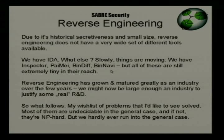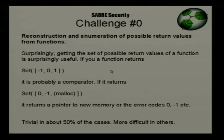I'll name ten research problems that, for most of them, I think can be solved using moderate amounts of time and money. Many will be NP-hard in the general case, but I've never met the general case, so don't be turned off. Challenge zero is so simple it gets the number zero: given a set of functions, generate for each function the set of possible return values. You see a function that can return +1, -1, 0 — you can almost deduce it's a comparator. This is really trivial, doable in a few hundred lines of Python.